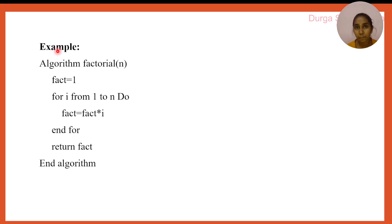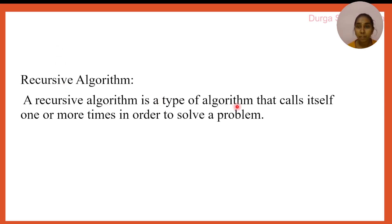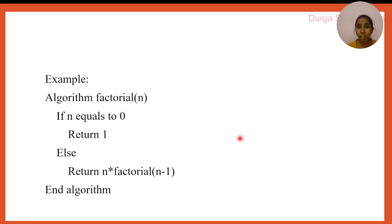The next topic is the recursive algorithm. Recursion means a function calling itself. If the algorithm contains recursion, we call it a recursive algorithm. A recursive algorithm is a type of algorithm that calls itself one or more times in order to solve a problem. Let's see the same problem — finding the factorial of a given number — solved recursively.